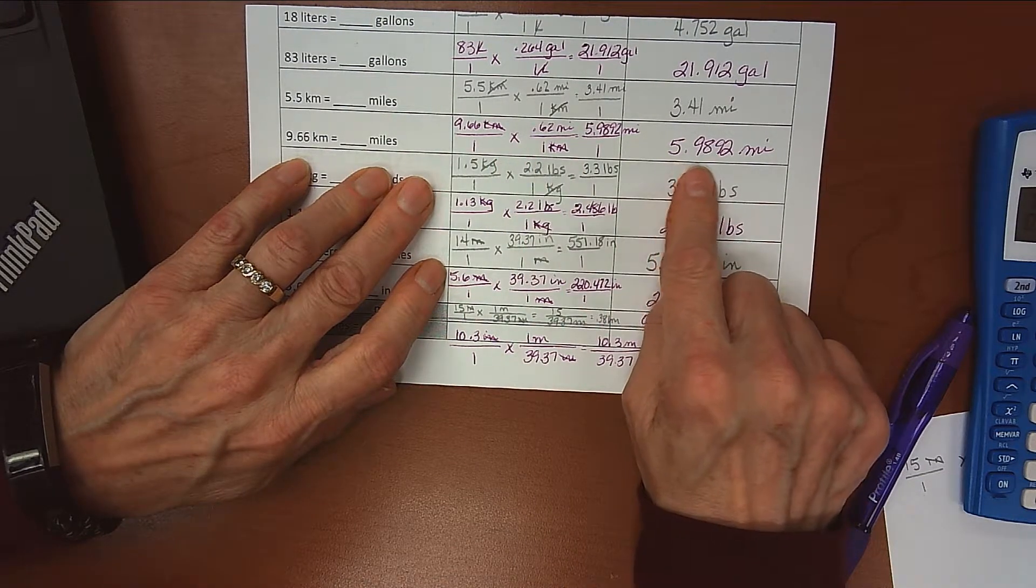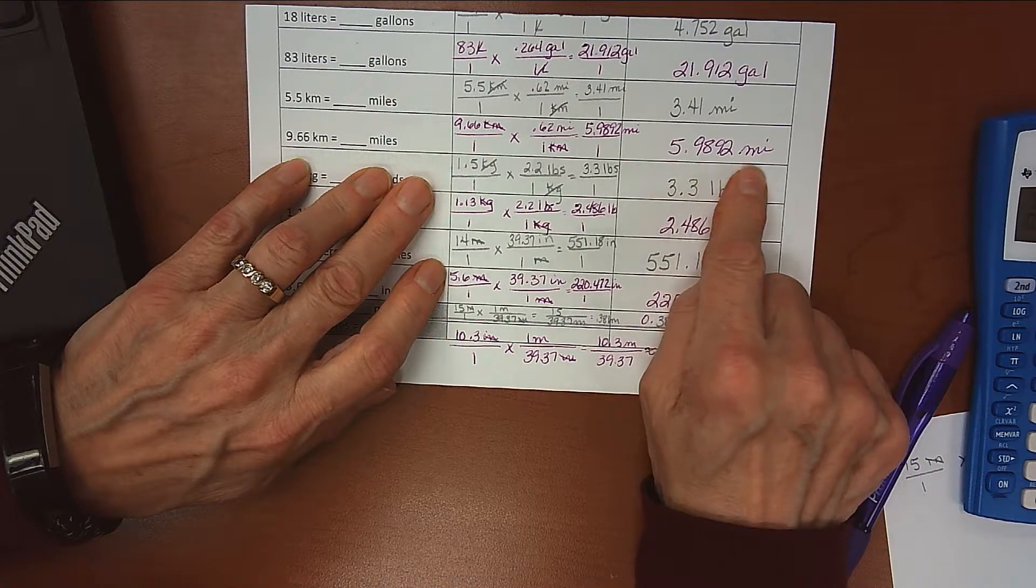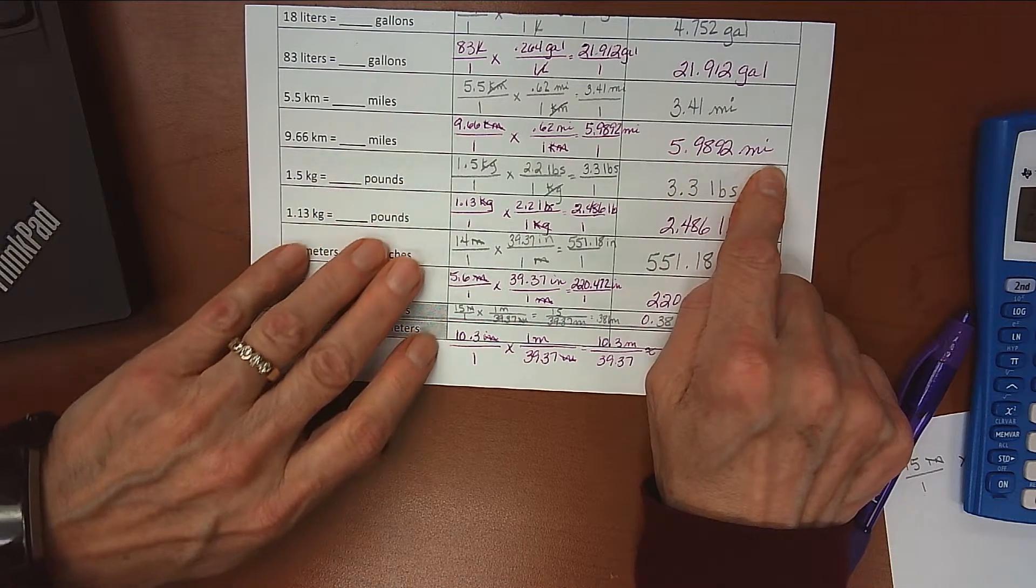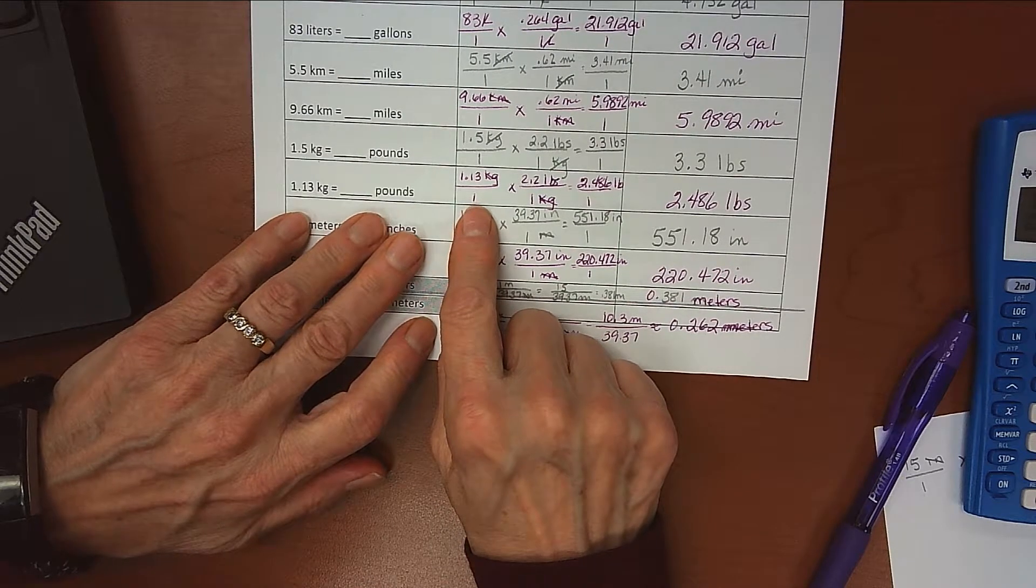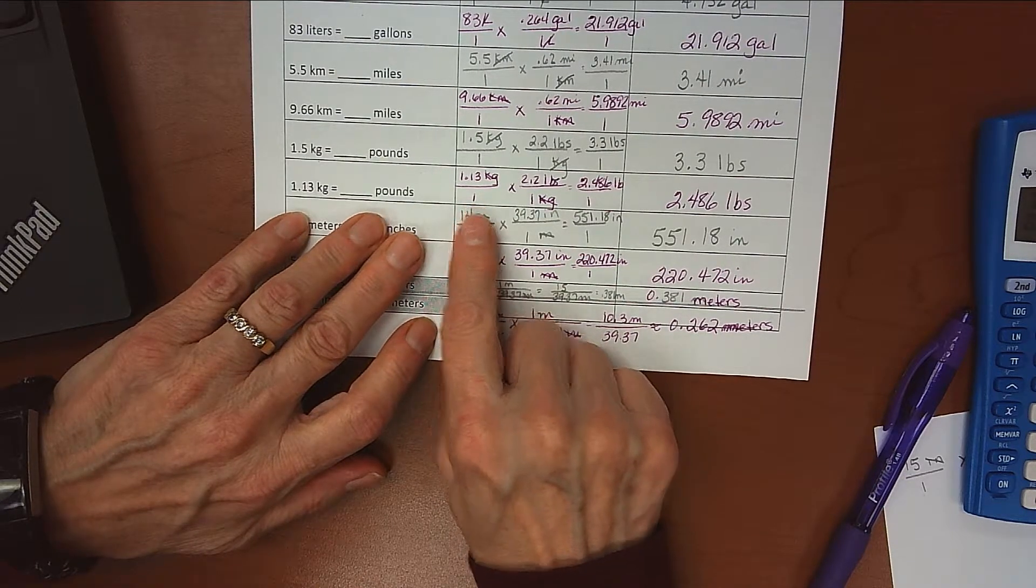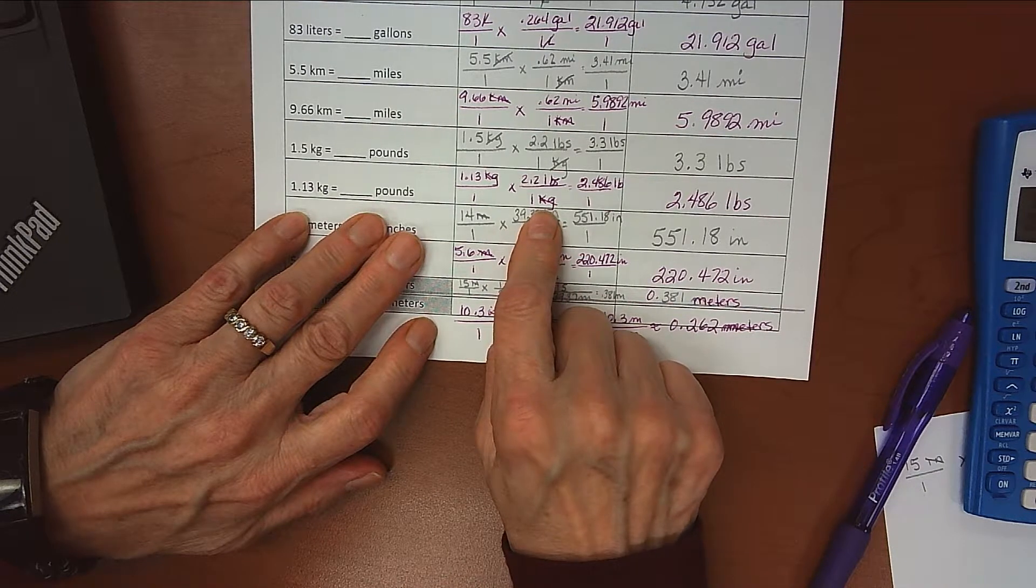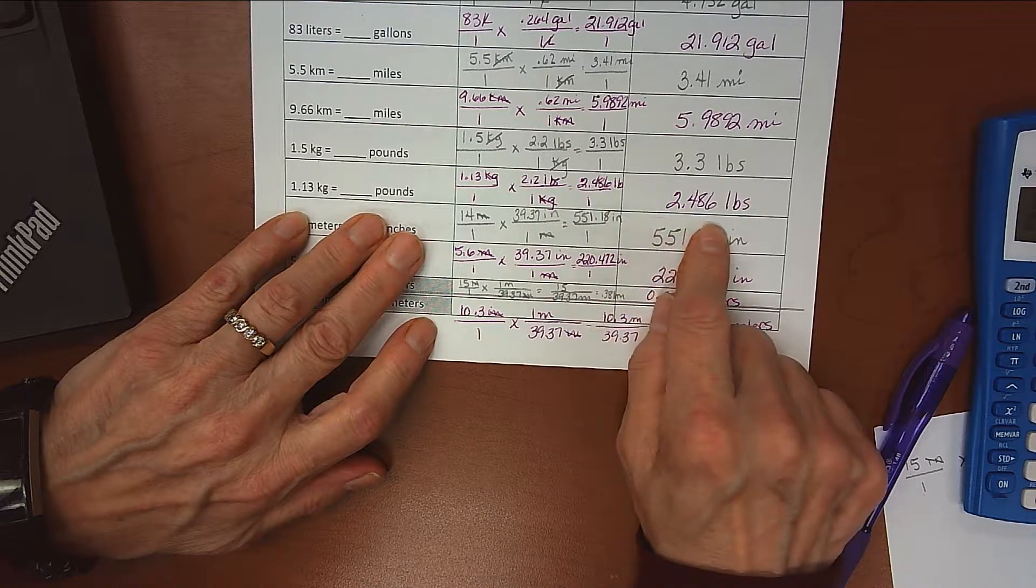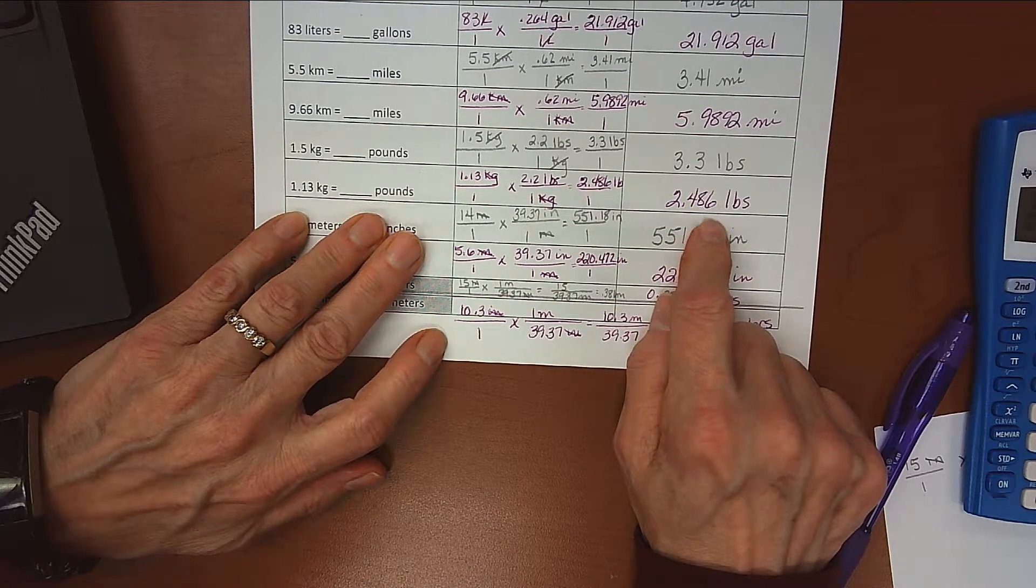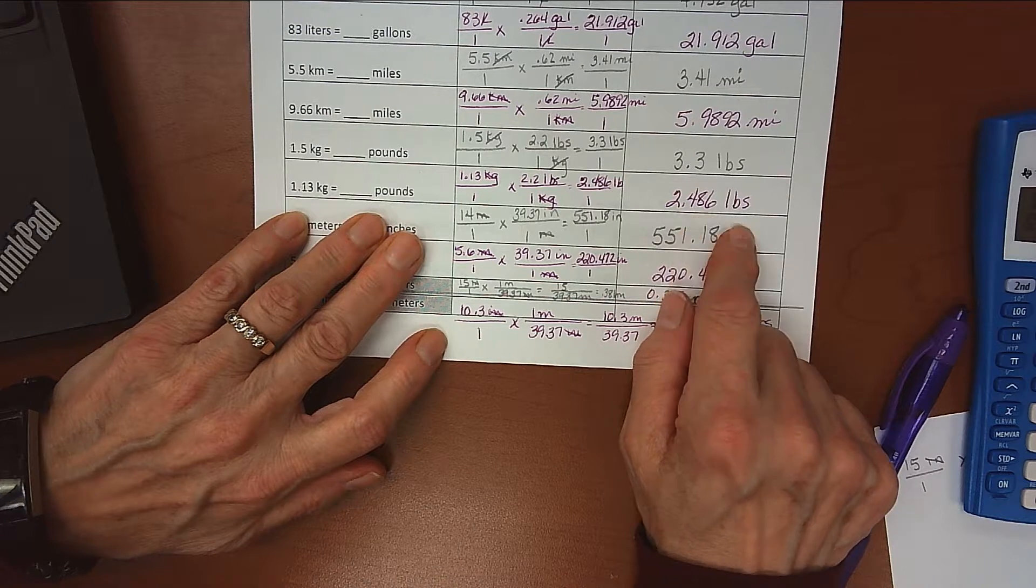Down here, 1.13 kilograms converted to pounds. My conversion factor was 2.2 pounds over 1 kilogram, and when I multiplied that out I got 2.486 pounds.